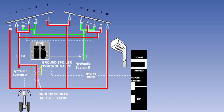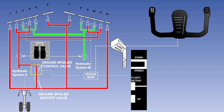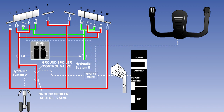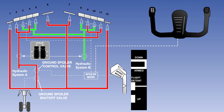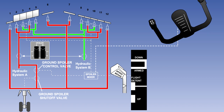The spoiler mixer receives inputs from the speed brake lever and the yoke in roll. It sums these inputs before signalling the flight spoilers to move the required amount. If in flight the speed brake lever is operated with no roll input, then the flight spoilers will raise symmetrically in proportion to the amount of lever movement. If a roll input is made with the speed brake lever in the down detent, then the flight spoilers on the down-going wing will raise in proportion to the roll input. If a roll input is made with the speed brake lever out of the down detent, then the flight spoilers on the down-going wing will raise further, while those on the up-going wing will retract by a similar amount.